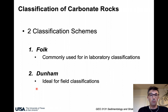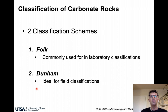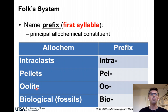In terms of classification of carbonate rocks, there are two main classification schemes: the Folk and the Dunham. The Folk is based on the identification of allochems and is commonly used in the laboratory because we need access to a microscope and a thin section to identify and quantify different types of allochems within the sample. Whereas Dunham is based on the texture — the relationship between cement, matrix, and grains — and it's ideal for field classification.